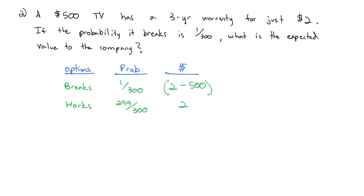So we know in order to calculate the expected value, we're going to multiply the probability times the payout. And I can do this all in my calculator, each line in one step if I use parentheses around that payout. So 1 over 300 times parentheses 2 minus 500 should give me negative 1.66. But 299 over 300 times 2 gives me a positive 1.99. And so when I add that together, we get 0.33, which, interestingly enough, is positive. That means that the company will make, on average, $0.33 per warranty sold.